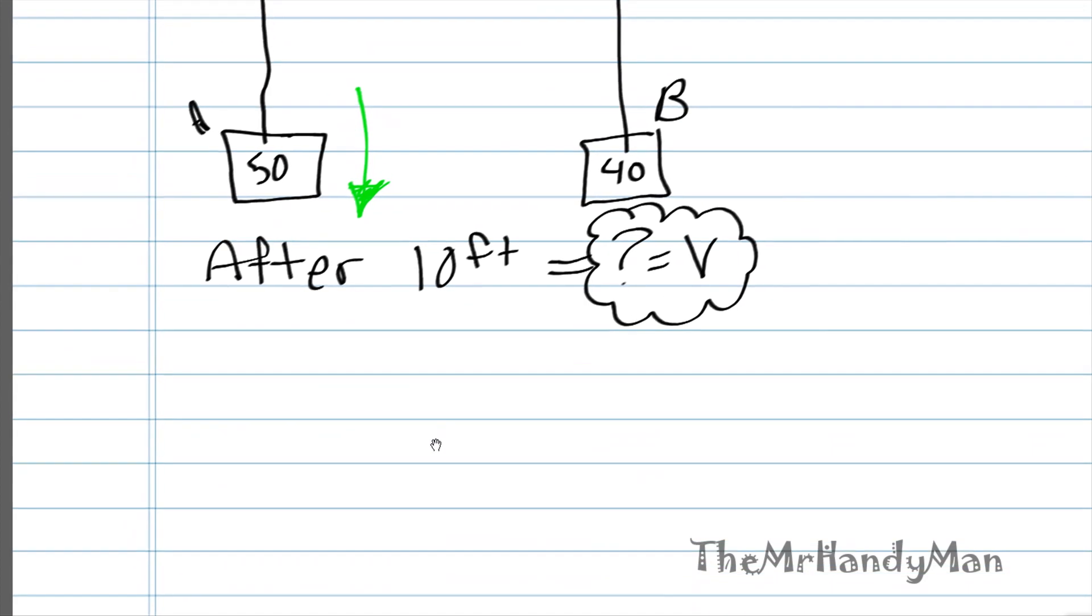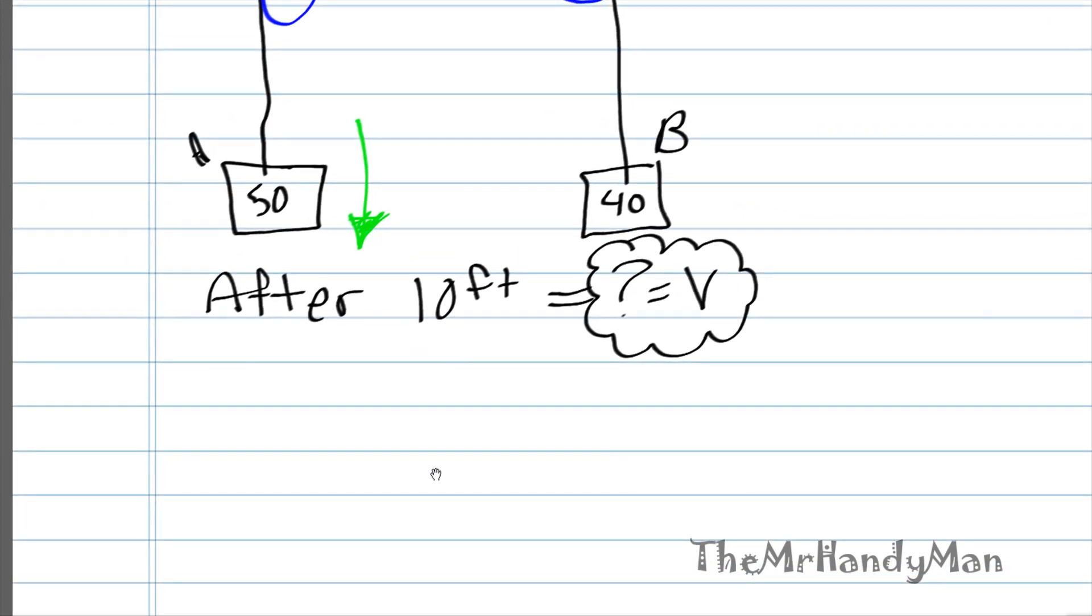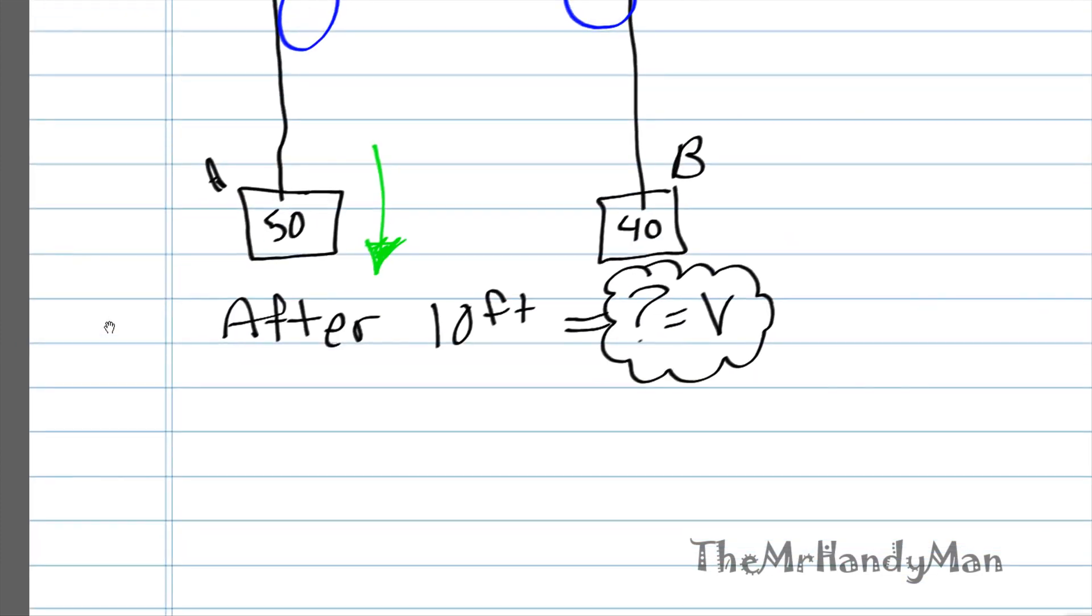So anyway, just to put a comparison, this box A is going to be moving with the force. Therefore, it will be positive energy, whereas the box B is going to be going against gravity.